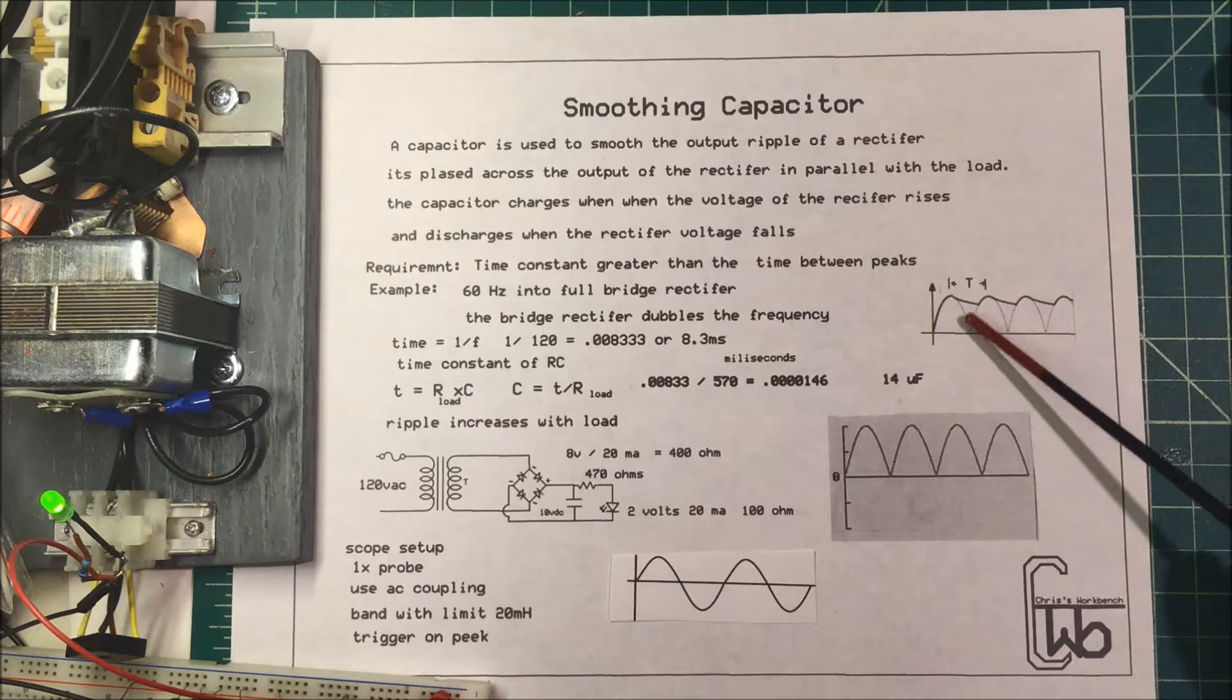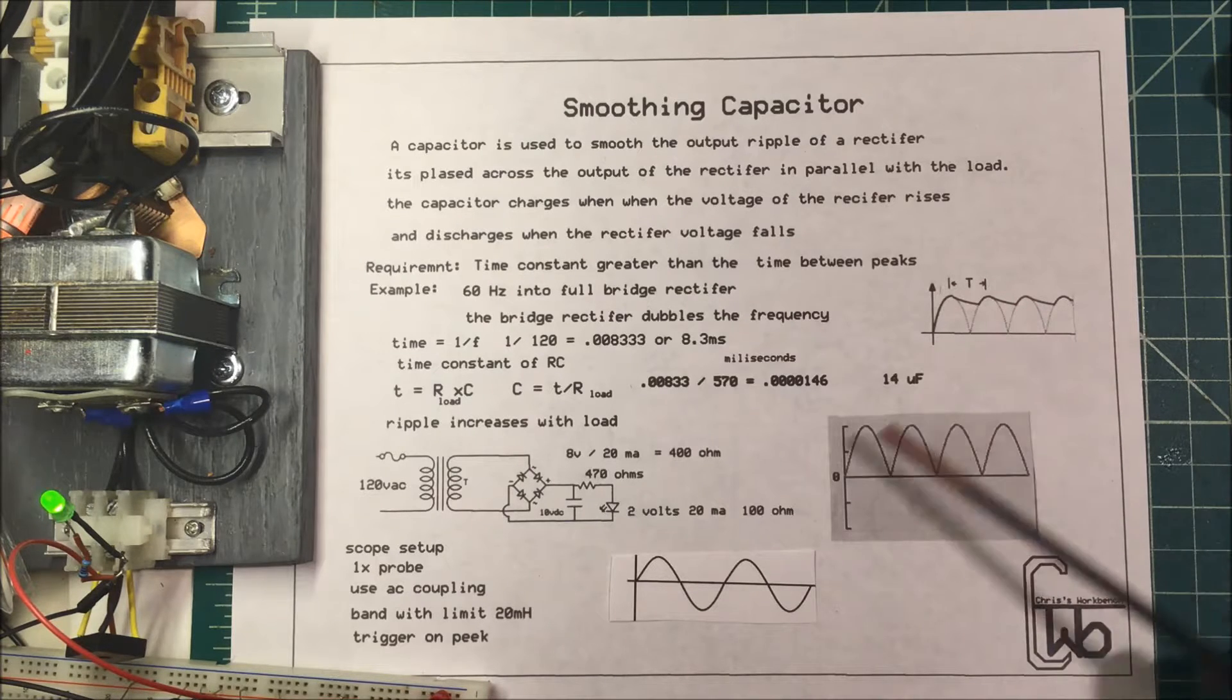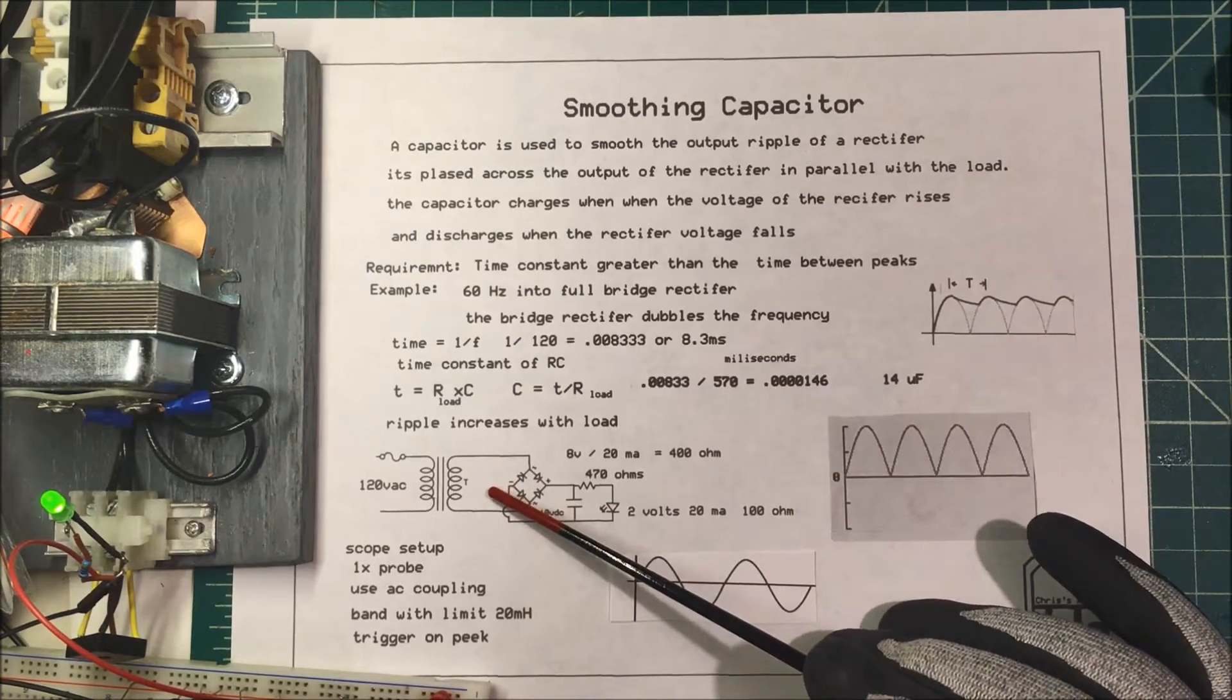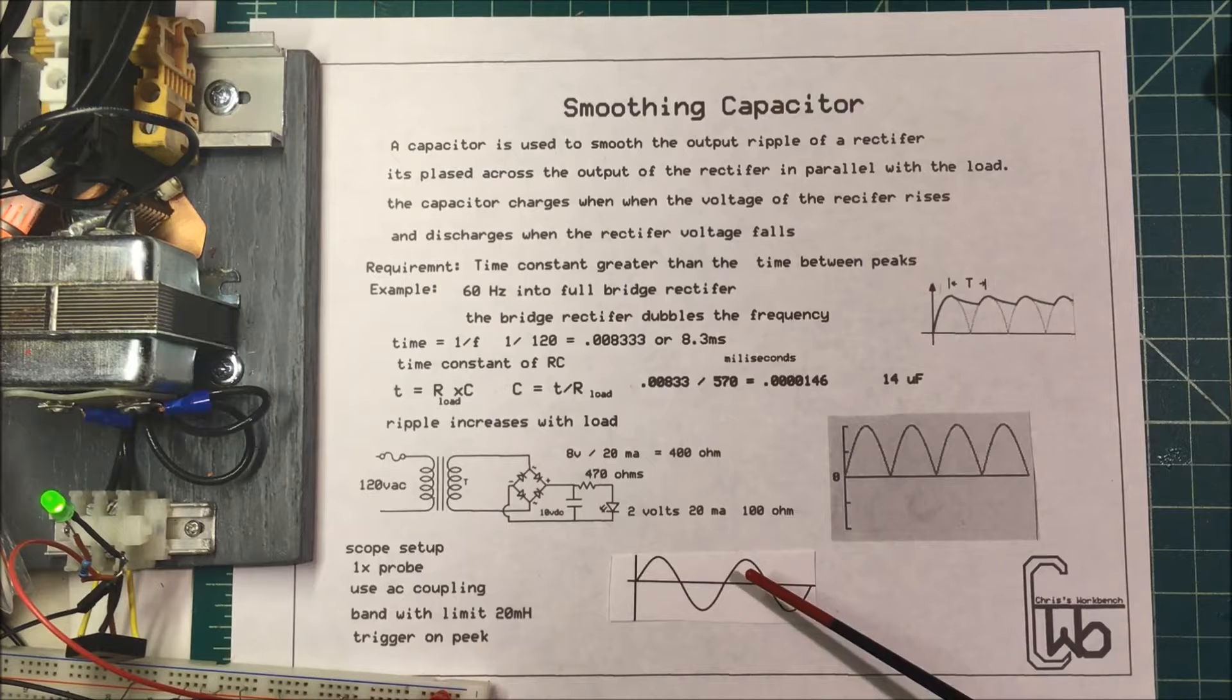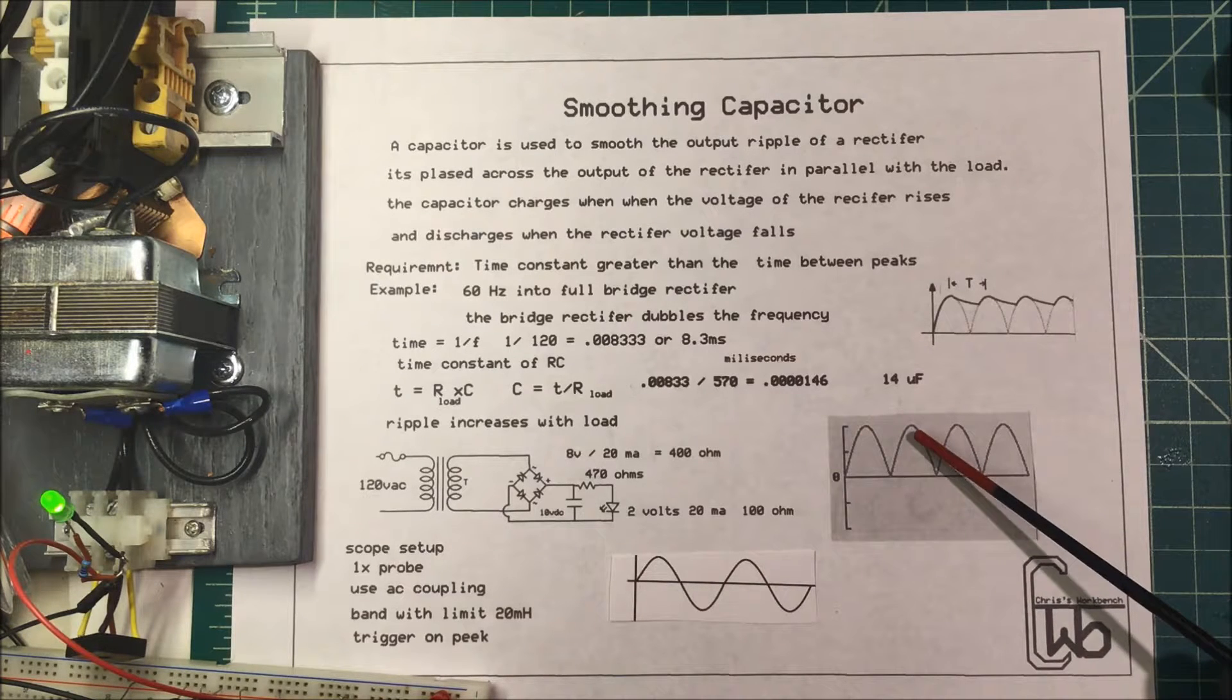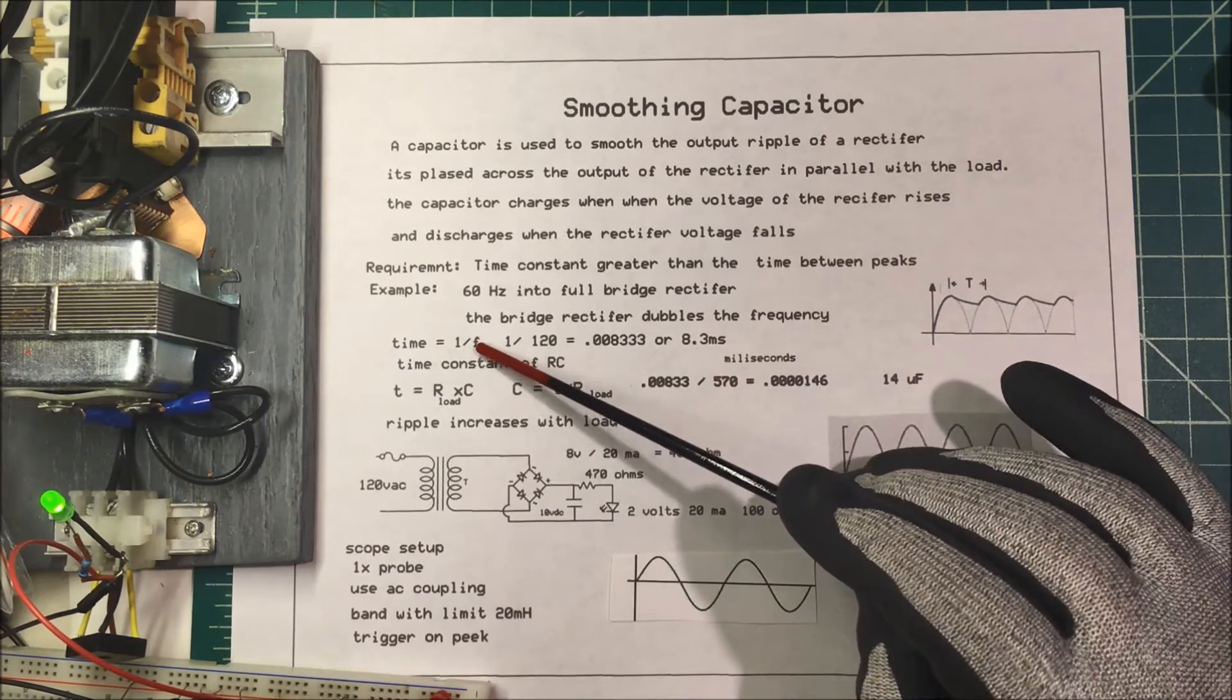We'll start by figuring out the time between these two peaks. In this circuit I'm using a 60 hertz input, so I get a sine wave. On the top here this is going to be at 120 hertz.